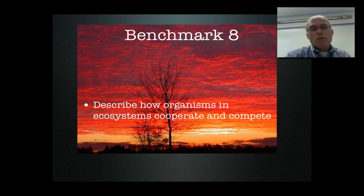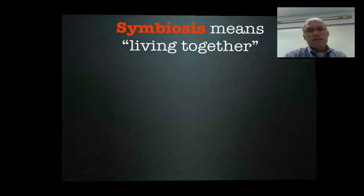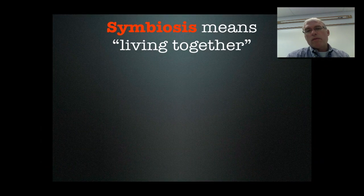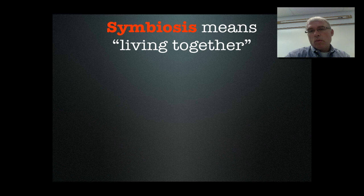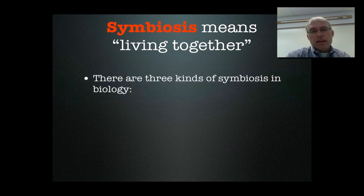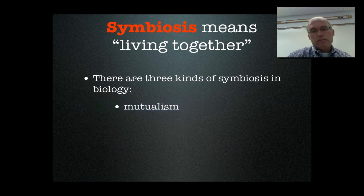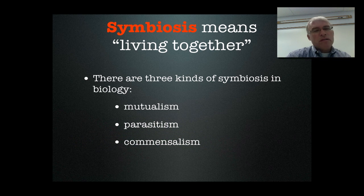Our next benchmark focuses on how animals cooperate or compete with each other in ecosystems. The most important form of cooperation we need to know are symbioses, the process of living together, two organisms working together. There are three kinds of symbiosis in biology: mutualism, parasitism, and commensalism. Most of you have probably heard of parasitism, but we need to know all three. We separate them by who is getting helped and who is being hurt in the relationship.